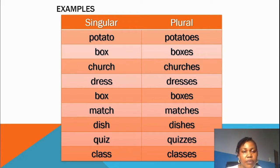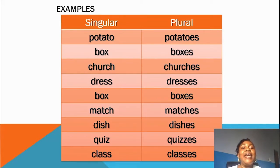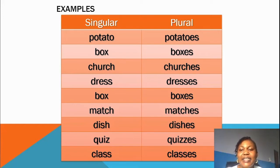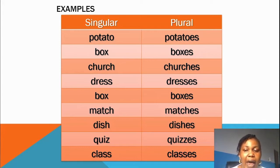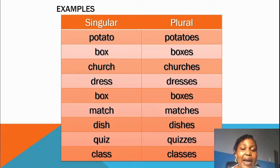Now look at the examples — singular and plural. POTATO: P-O-T-A-T-O. Whenever a word ends with the letter O, you add ES to form its plural, though there are some exceptions we won't go into now. Box, B-O-X — X is the last letter, so we add ES to write the plural. Then: church — churches, dress — dresses, match — matches, dish — dishes, class — classes. Beautiful!